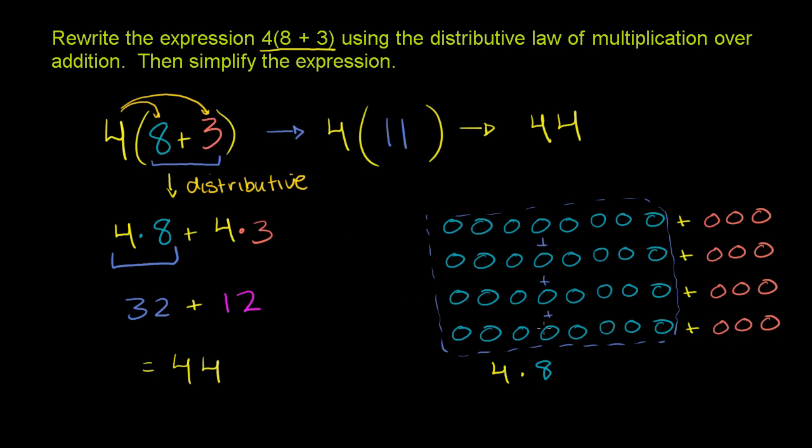And what is this over here in the orange? We have 1, 2, 3, 4 times, and each time we have 3. So this right here is 4 times 3.